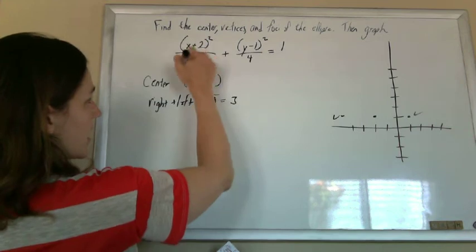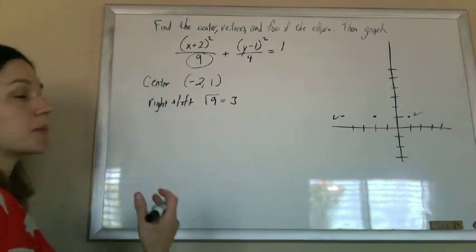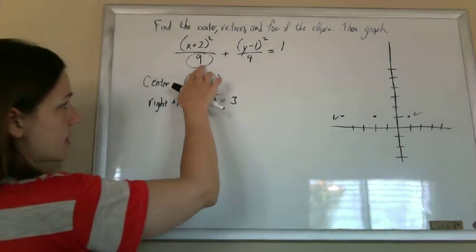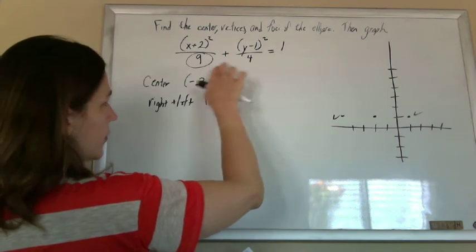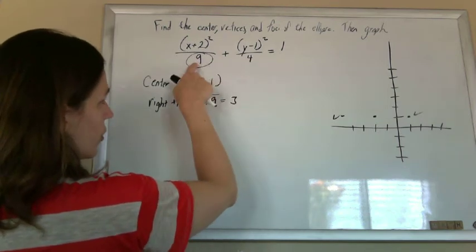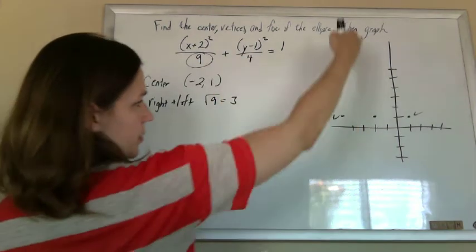And I know those are my vertices because that is the bigger number. So for an ellipse, the bigger number controls the vertices. Had this been switched, the 4 been here and the 9 been here, the vertices would have been up and down.